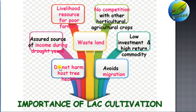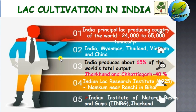The host trees are easily survivable in drought areas and wastelands. These are the reasons why lac cultivation is so important in tribal areas. India is the major contributor in lac production, producing around 24,000 to 65,000 tons per year.